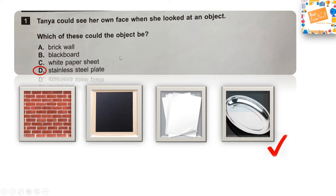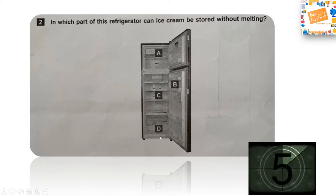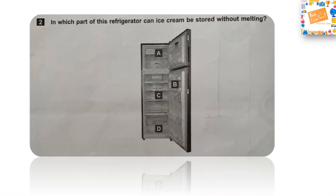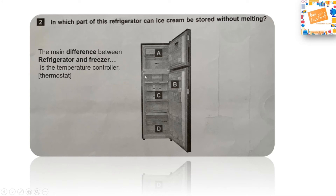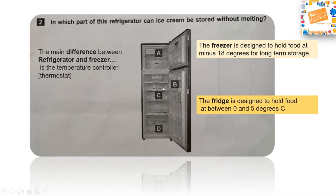The right answer is Option D: stainless steel plate. Next question: In which part of this refrigerator can ice cream be stored without melting? A freezer is designed to hold food at minus 18 degrees or below, while a refrigerator holds food between 0 and 5 degrees. Ice cream needs to be frozen below 0 degrees, hence it has to be kept in Option A: the freezer.